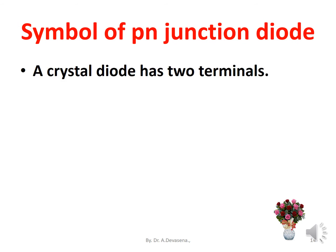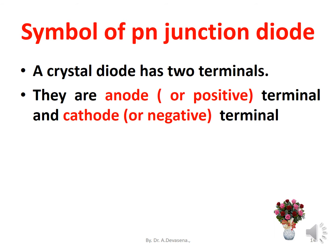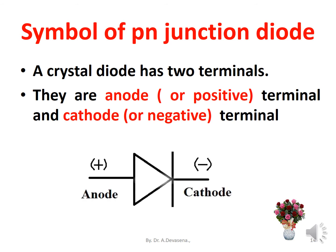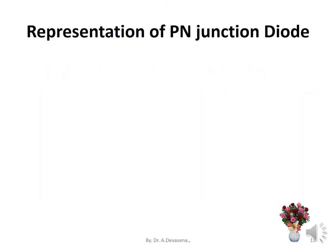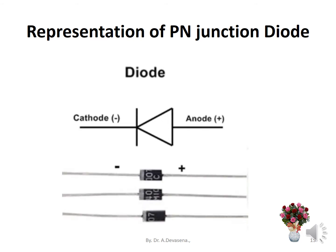Symbol of P-N junction diode: A crystal diode has two terminals — the anode or positive terminal, and the cathode or negative terminal. A P-N junction diode has a white ring; the terminal nearer to the white ring is represented as the cathode, and the other terminal is represented as the anode.